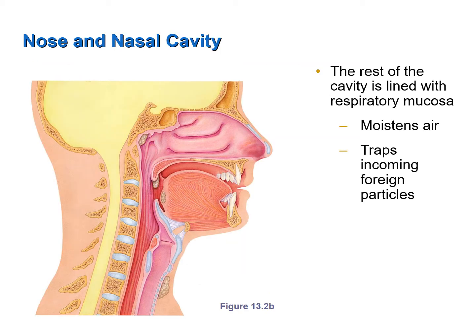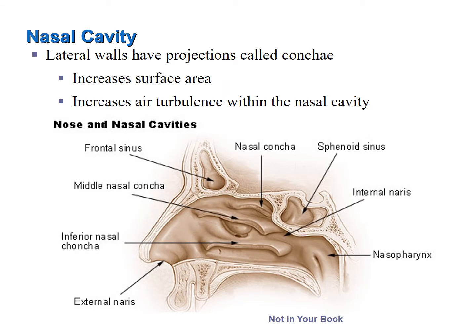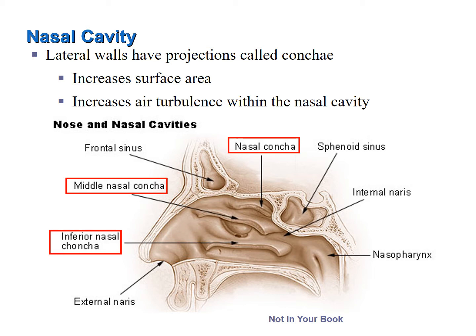The remainder of the nasal cavity is lined with respiratory mucosa for moistening the air and trapping incoming particles. The lateral walls of the nasal cavity have projections called nasal conchae, which increase the surface area of the mucosa and increase air turbulence within the nasal cavity — causing the air to bounce around and interact with the mucus membrane. The more interaction between air and the mucus membrane, the greater its effectiveness in warming, moistening, and cleansing the air.